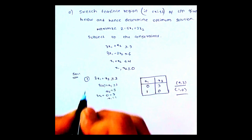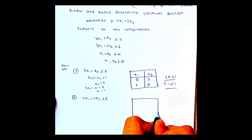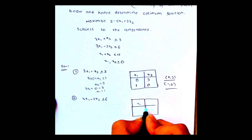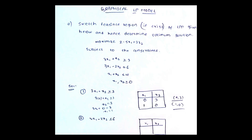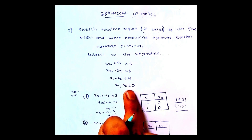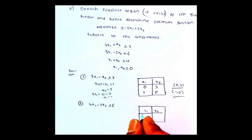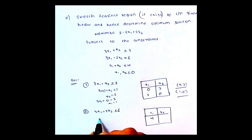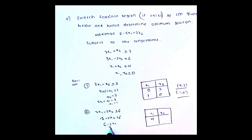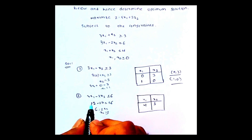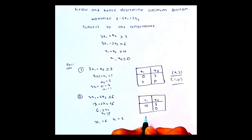Next, the second equation: 3x1 minus 2x2 less than or equal to 6. If I take x1 as 0, I will get a negative value for x2, and since x1, x2 must be greater than or equal to 0, we can't take that. So let me take x1 equal to 4: 3 into 4 is 12, minus 2x2 equals 6, so x2 equals 3. If x2 is 0, then 3x1 equals 6 and x1 equals 2. So the two points are (4, 3) and (2, 0).